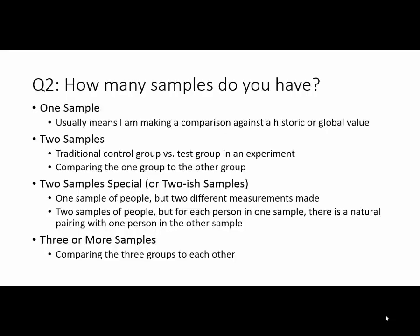Here's Question 2: How many different samples will you have, or how many different groups will your subjects be in? In a classic experiment you have a test group and a control group — two different groups, two separate samples — and you're most likely comparing the results of one group to the other. But maybe you only have one group; in that case you're comparing results to some historical number or global value from an outside source. Possibly you could have even more than two groups. I also mention 'two samples special' — or 'two-ish samples' — because you might have two groups of people, or one group of people but with two separate measurements taken from them.